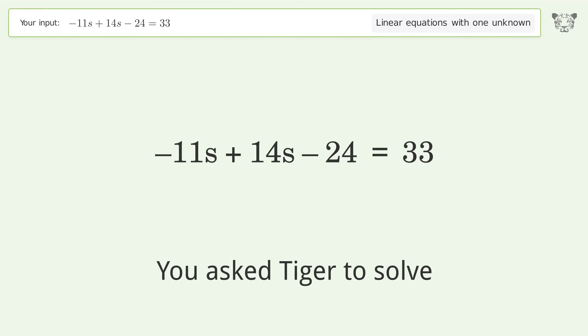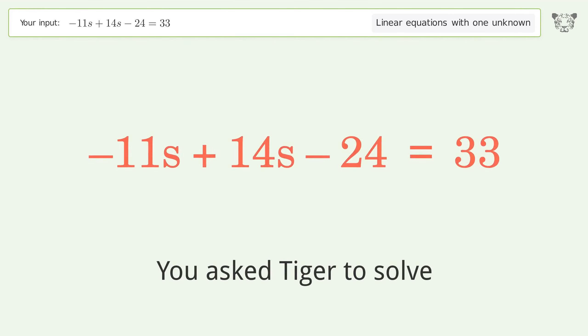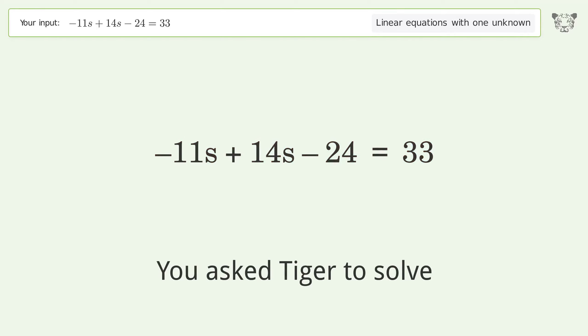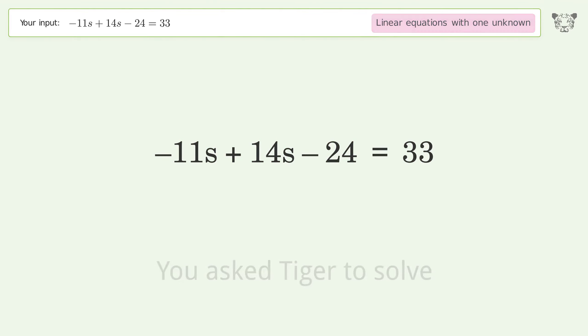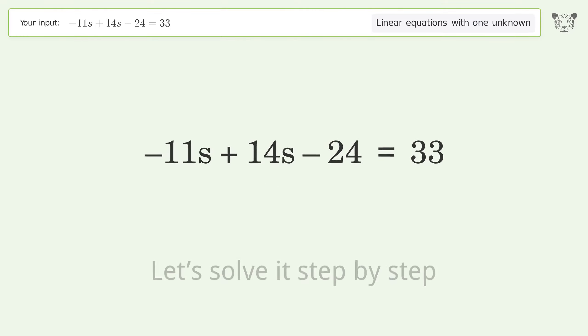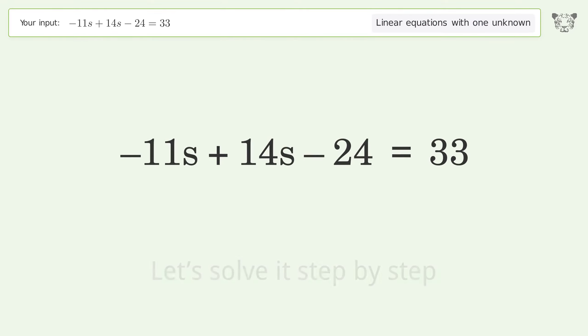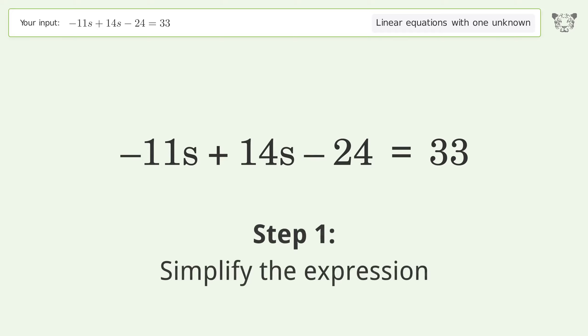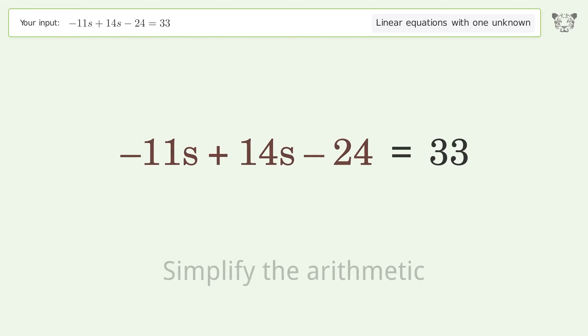Tiger solves a linear equation with one unknown. The final result is s equals 19. Let's solve it step by step: simplify the expression and simplify the arithmetic.